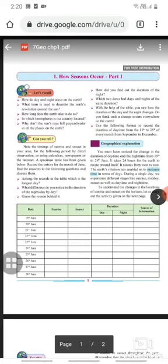Which two dates had days and nights of the same duration? With the help of the table, you saw how the duration of the day and night changes. Do you think such a change occurs everywhere on Earth? Use the following format to record the duration of daytime from 19th to 28th of every month from September to December in the same manner.